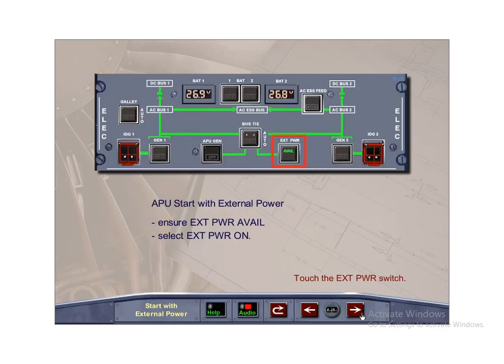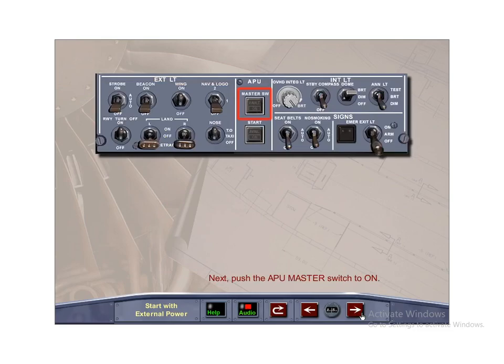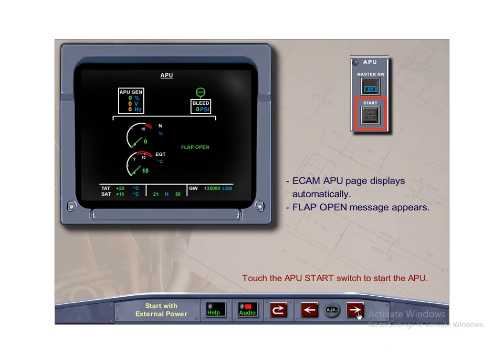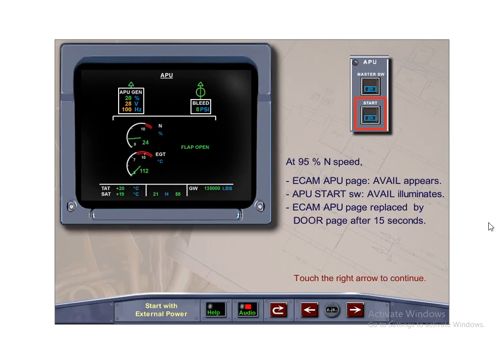To start the APU with external power, push the external power switch to its ON position. The ON light illuminates. Next, push the APU master switch to its ON position. The ECAM APU page automatically displays. The flap open message appears after a few seconds. Push the APU start push-button switch to start the APU. The ON light illuminates on the APU start switch.